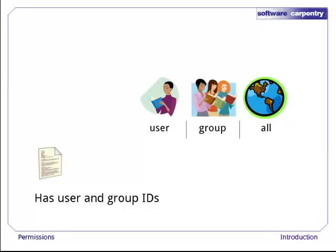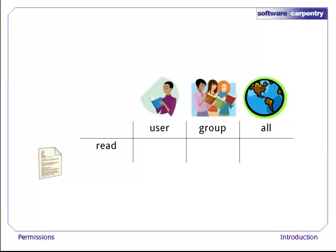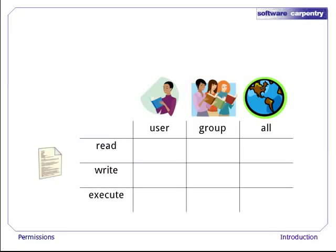This means that every user on the system falls into one of three categories: the owner of the file, someone else who's in that file's group, and everyone who doesn't fit into the first two categories. For each of these three categories, the computer keeps track of whether people in that category can read the file, whether they can write to it (i.e. modify the file), and whether they can execute it (i.e. run it if it's a program).